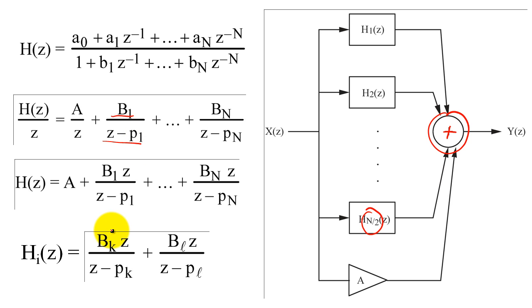So, if any poles or residuals are complex, then for the residuals, b sub k and b sub l must be complex conjugates, and p sub k and p sub l must be complex conjugates for the poles.